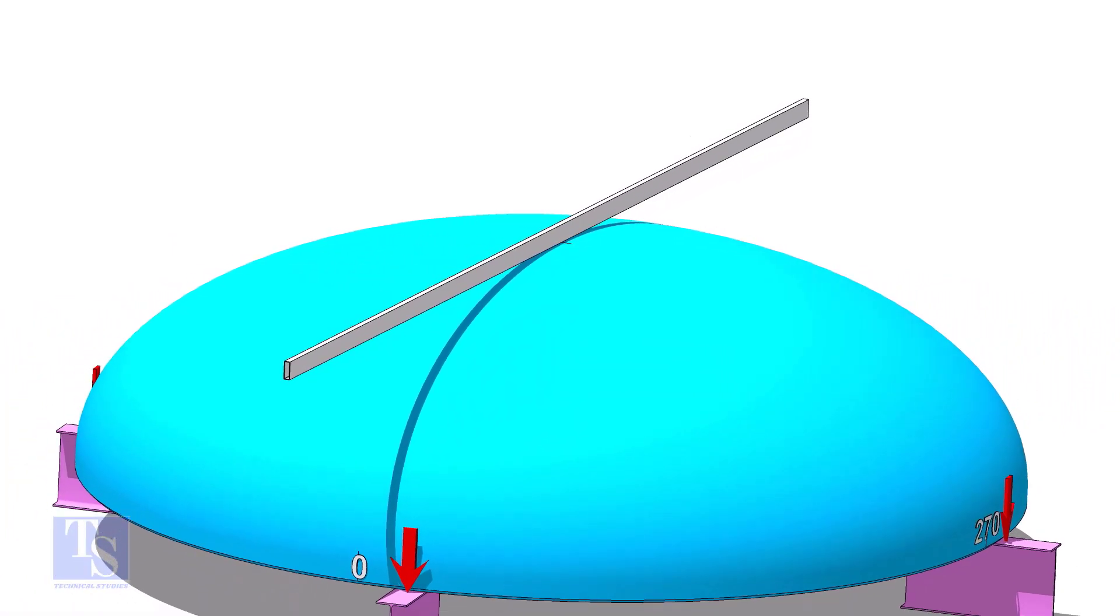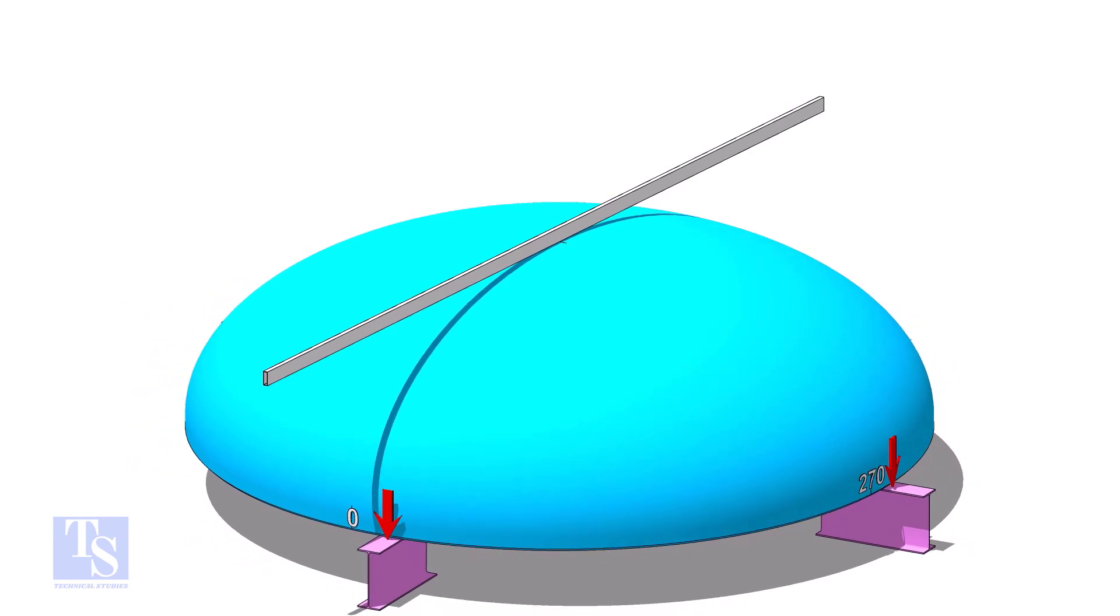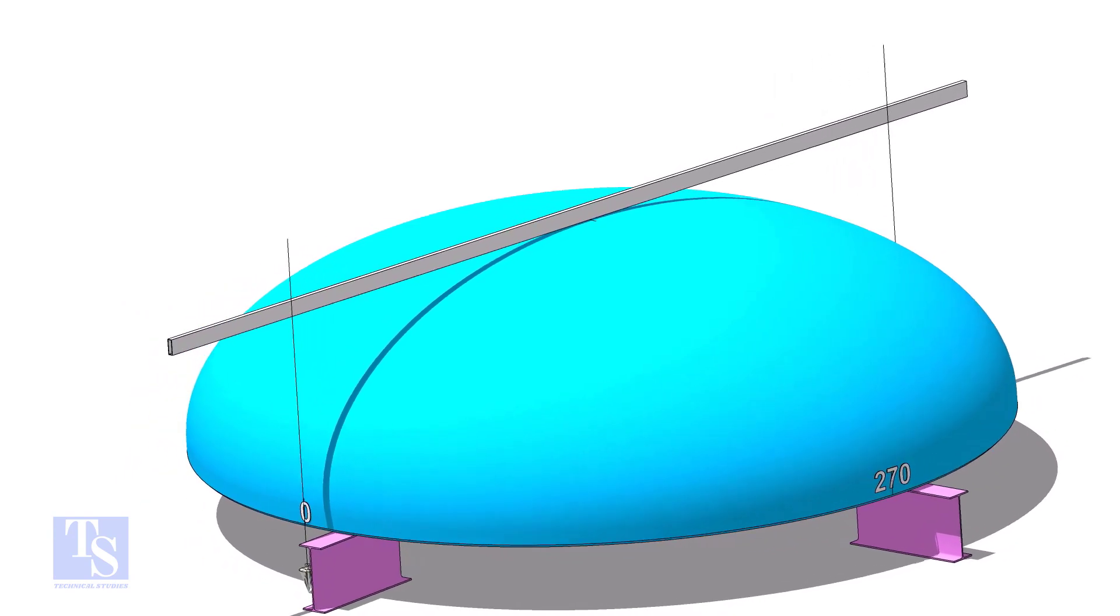Put a straight piece of angle or box section on the top of the dish end. The length of the section shall be more than the diameter of the dish end. One edge of the box shall be on the center.